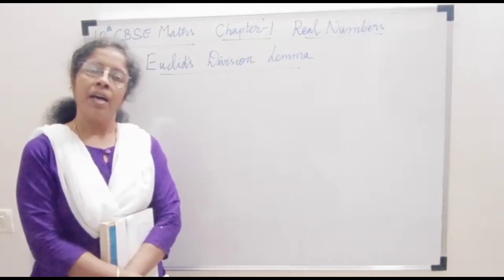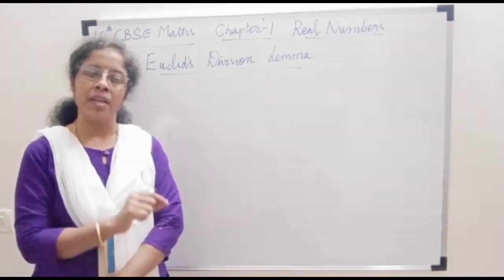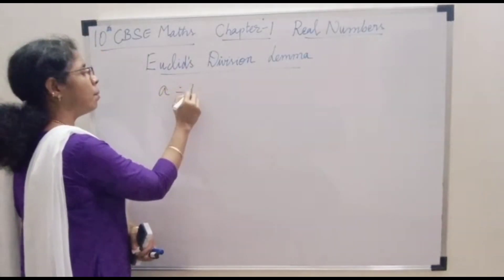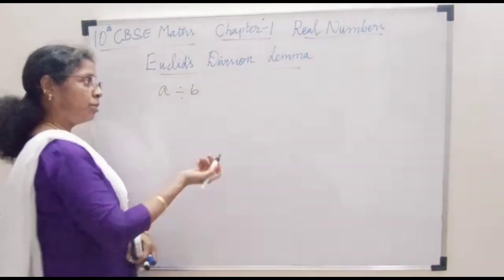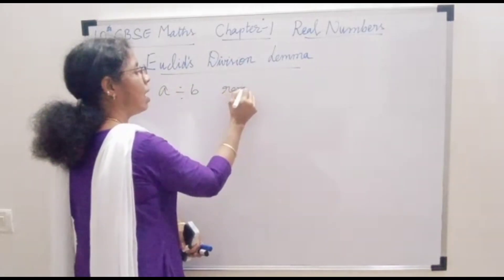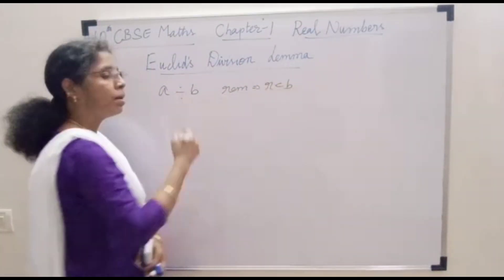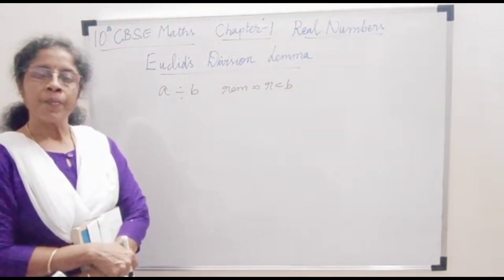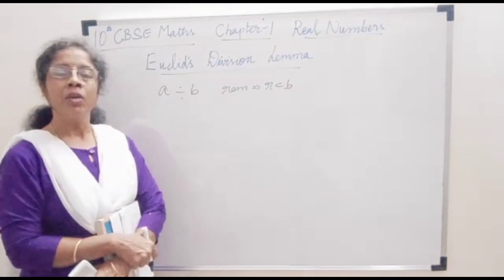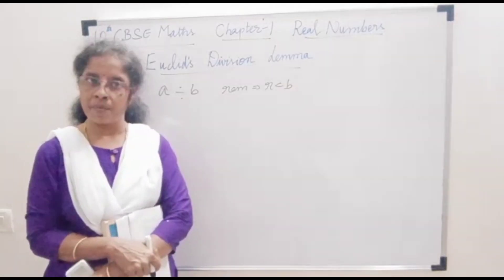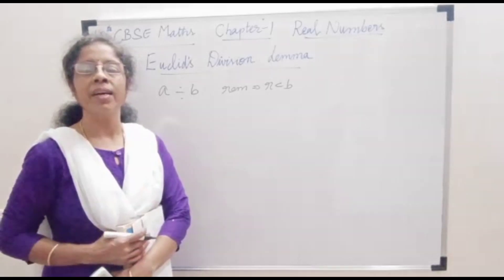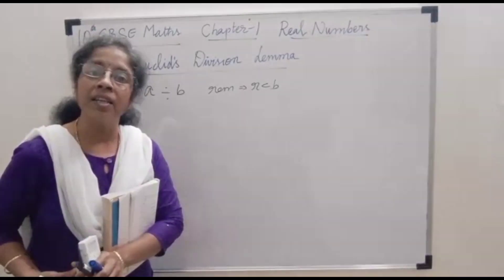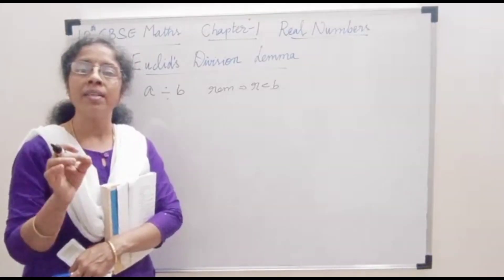If any positive integer A is divided by positive integer B, it leaves a remainder R which is less than the divisor B. When you find HCF using long division, two positive integers are given as dividend and divisor. The process continues until you get remainder 0.